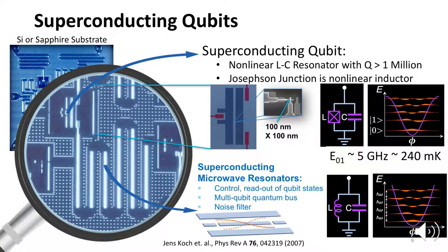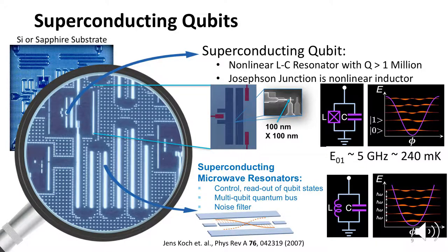Superconducting qubits are non-linear LC resonators with a Q of greater than one million. The non-linear inductor is a Josephson junction — a superconductor-insulator-superconductor device — which shunts two parallel superconducting plates forming a lateral capacitor. The lowest two energy levels of this device are used as the qubit. Two-qubit interactions are mediated through capacitively coupled transmission lines which have a different resonant frequency than either qubit. Microwave pulses, typically in the range of 5 to 7 gigahertz, are used to control, entangle, and measure the qubit state.